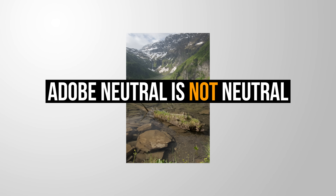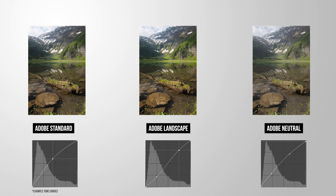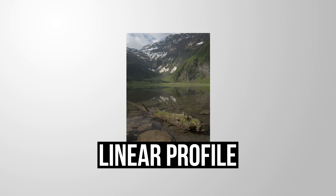However, saying Adobe neutral is the most neutral version would be a lie. Every Adobe profile adds its own specific tone curve to the image. This means even when using Adobe neutral, the photo is still slightly manipulated. As some of you pointed out in the comments correctly, to have the most control, you want to use a linear profile.